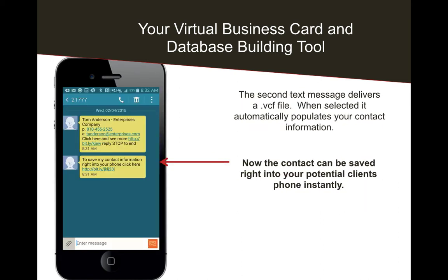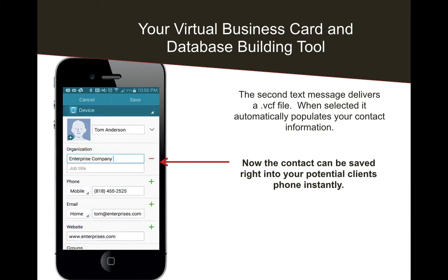The second text message you get gives them a link that actually downloads the information right into their phone. It's a VCF file. So when you give somebody your virtual business card and they click that second link, it actually saves the information — your name, company name, website, email address, and everything — right into their phone. So you're actually delivering a business card right to them.